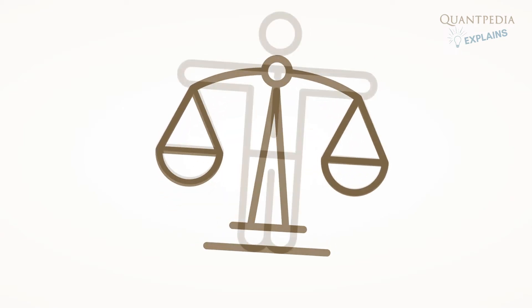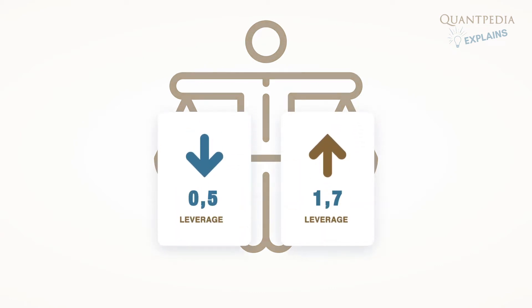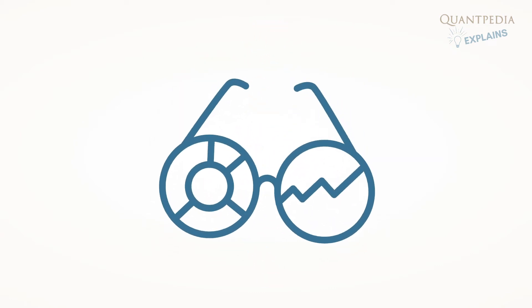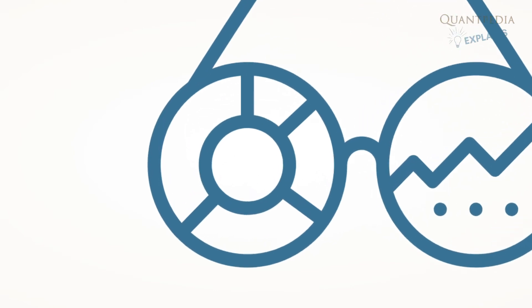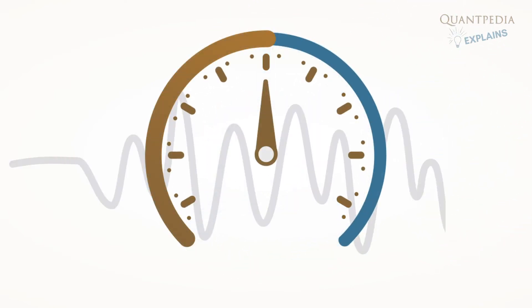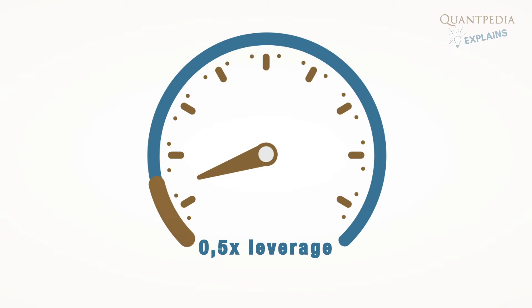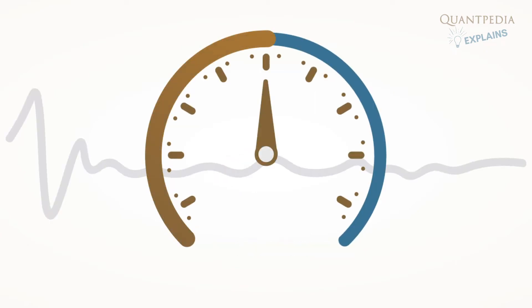To do this, the portfolio managers must increase or decrease the amount of leverage, depending on the actual volatility of the portfolio. If the portfolio's volatility goes up, managers must scale down the portfolio. On the other hand, if the volatility goes down, the portfolio manager should take more leverage.